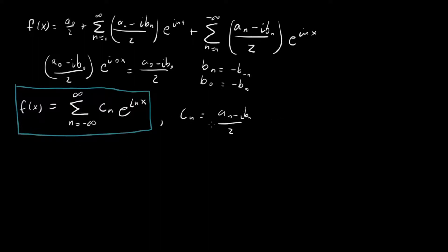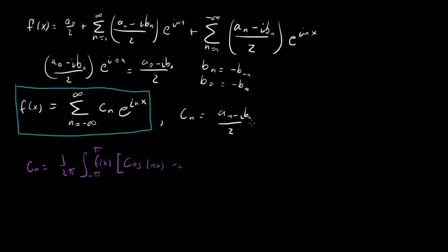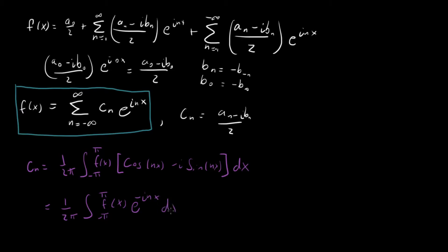So let's find a simpler expression for cₙ. We have cₙ equals one half times (aₙ minus i bₙ), which expands with 1 over pi from the integral from minus pi to pi of f of x: aₙ contributes cosine nx, and minus i bₙ contributes minus i times sine nx. But cosine nx minus i sine nx is exactly e to the minus inx. So cₙ simplifies to 1 over 2π times the integral from minus pi to pi of f of x times e to the minus inx dx.